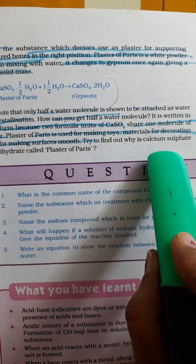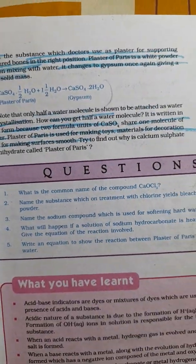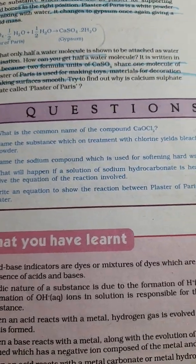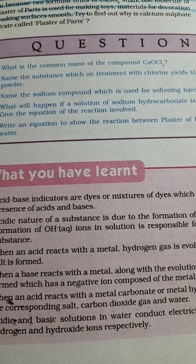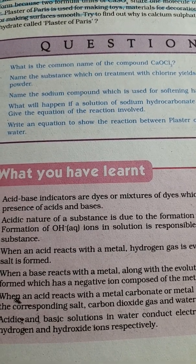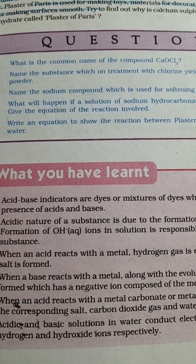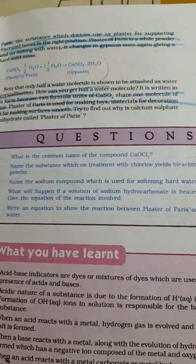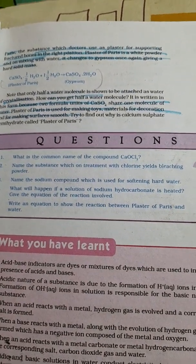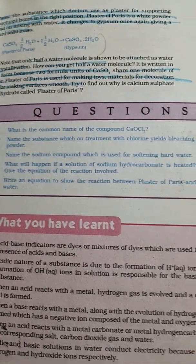Plaster of Paris is used to make toys, decorative materials, and for making surfaces smooth. It is called calcium sulfate hemi-hydrate. We are now coming to the end of this lesson, and question answers will be uploaded. Students from the state syllabus can also watch, as the portions are common. Don't forget to share, like, and subscribe to Amazing World of Science. Watch the lessons repeatedly two to three times to understand the concepts well. Thank you for watching!